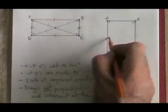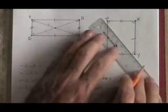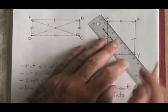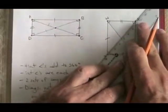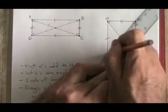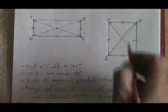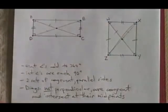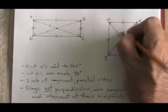It has two sets of congruent, parallel sides. The diagonals are not perpendicular, but they are congruent, and they have to intersect at their midpoints. Oops, that's a bad line. So this is a midpoint. These two diagonals are congruent. They are not perpendicular. These are the properties of a rectangle.